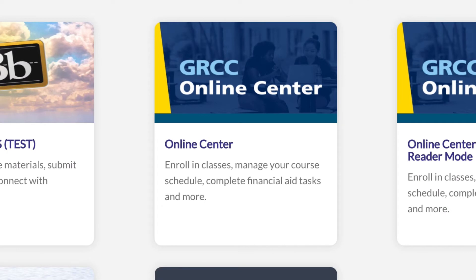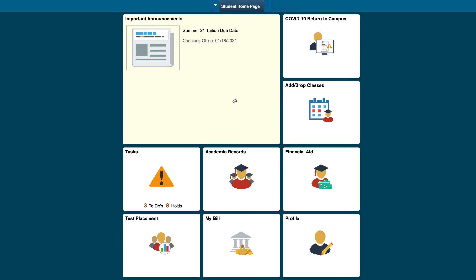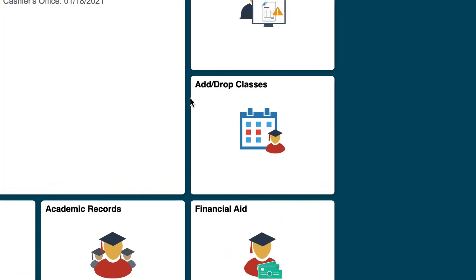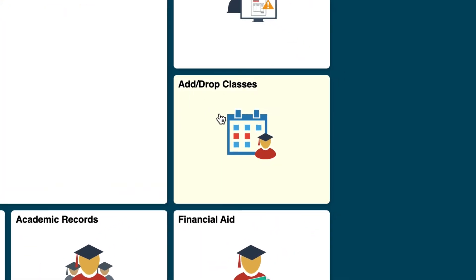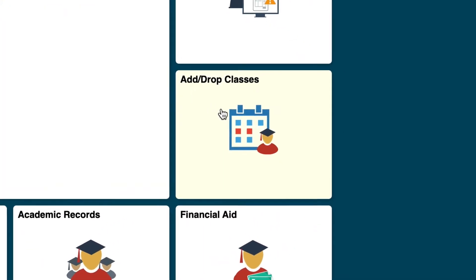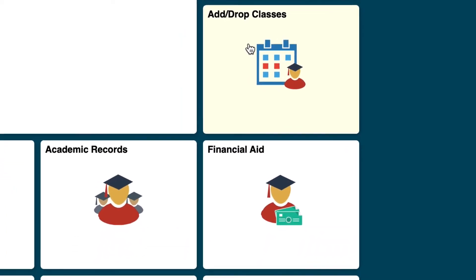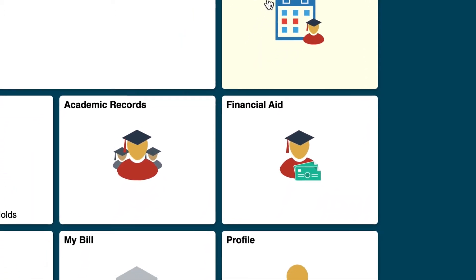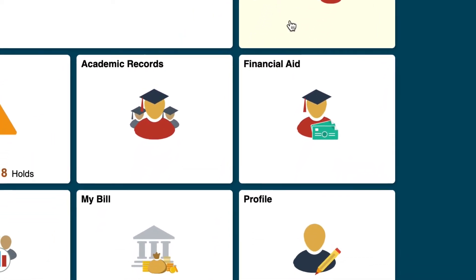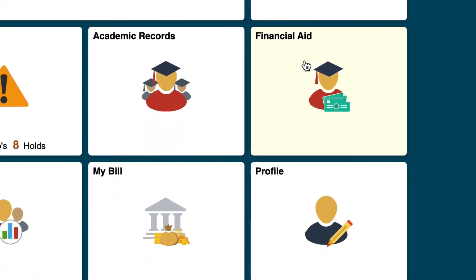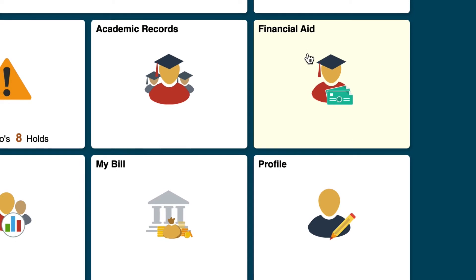Your Online Center is like your business account with GRCC. You can sign up for classes, check your grades, request a digital or physical transcript, see your semester tuition bill, and check financial aid award status.